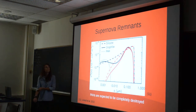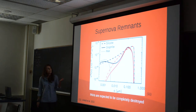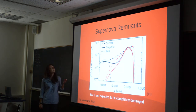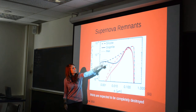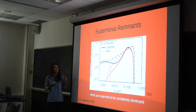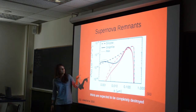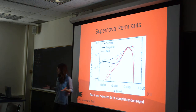One environment where we expect PAHs to be destroyed is inside a supernova remnant, because of the high-velocity shockwave and the hot gas within the remnant. This graph shows a theoretical model of the dust grains — the PAHs are the dotted line. The black shows the volume before the shockwave and the red shows after. You can see there are no PAHs after the shockwave, so we expect all of them to be destroyed.